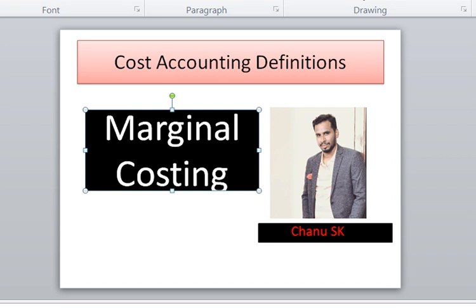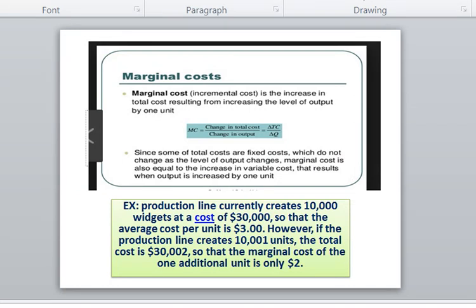Before I explain about these two things, I'll let you know what is the definition of Marginal Costing. Marginal Costing is the additional cost incurred for the production of an additional unit of output. The formula is calculated by dividing the change in total cost by the change in product output.